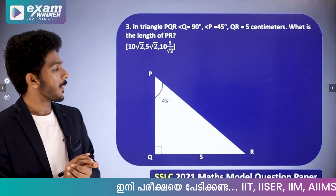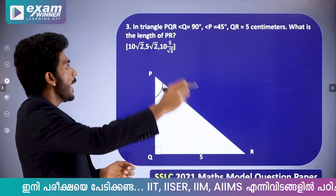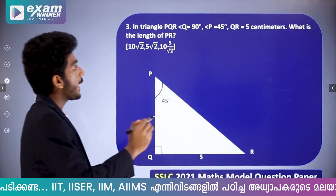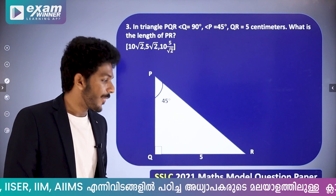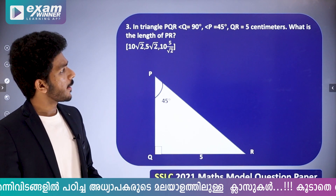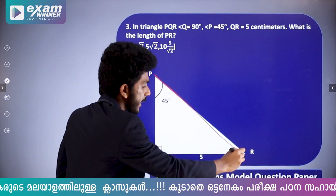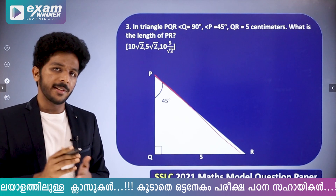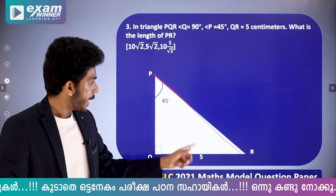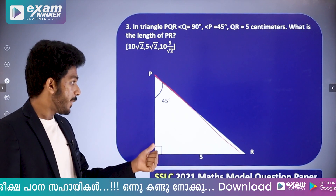Now let's do the third question — it will be trigonometry. In triangle PQR, angle Q is 90 degrees, angle P is 45 degrees, and QR is 5 cm. What is the length of PR, the hypotenuse? This angle is 45 degrees and this angle is 90 degrees.